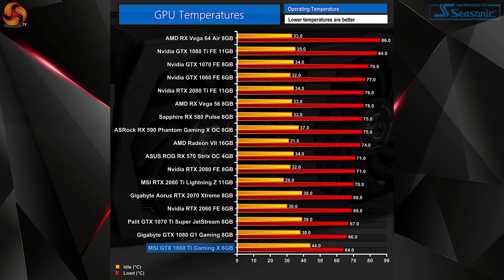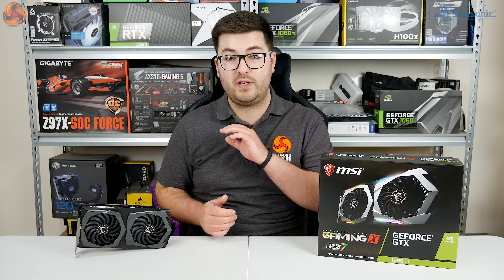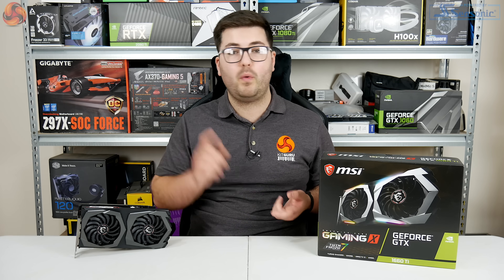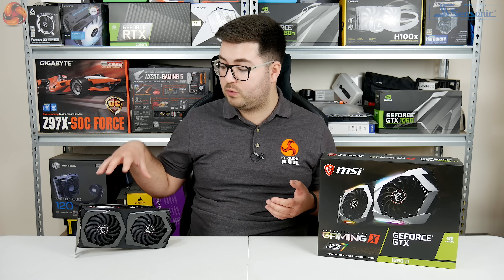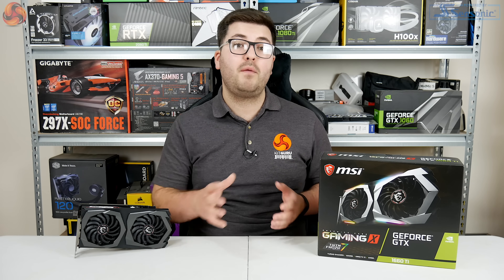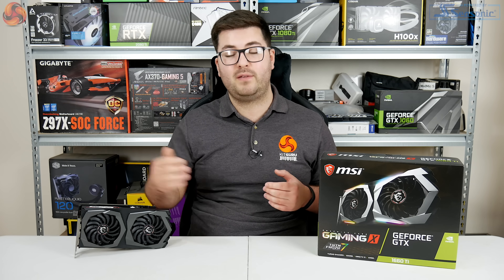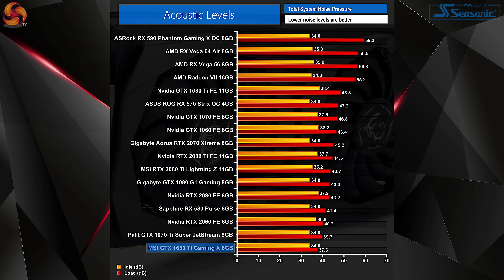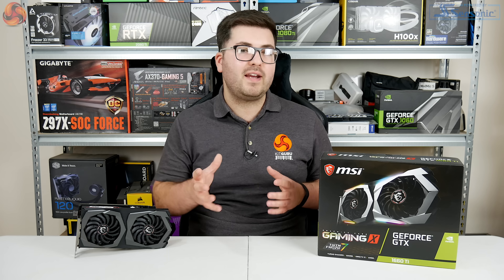The cooler's performance was impressive — the GPU peaked at no hotter than 64°C under load, making it one of the coolest-running cards tested in recent months. The TU116 with 1536 CUDA cores clearly doesn't need much cooling, so smaller dual-fan coolers like this should manage it just fine. Acoustic performance is even more impressive: the Gaming X produced barely over 37 dB of noise — the quietest card on the chart by a fair distance.